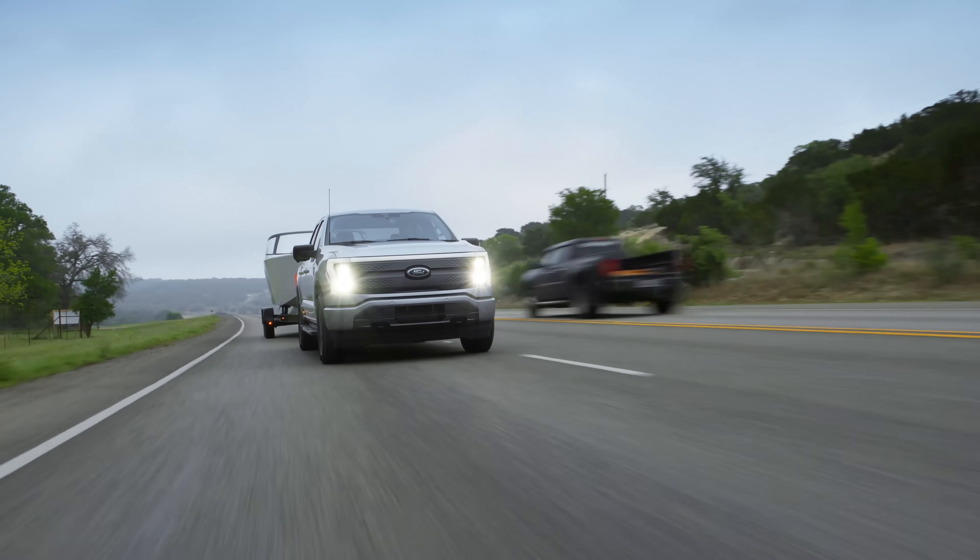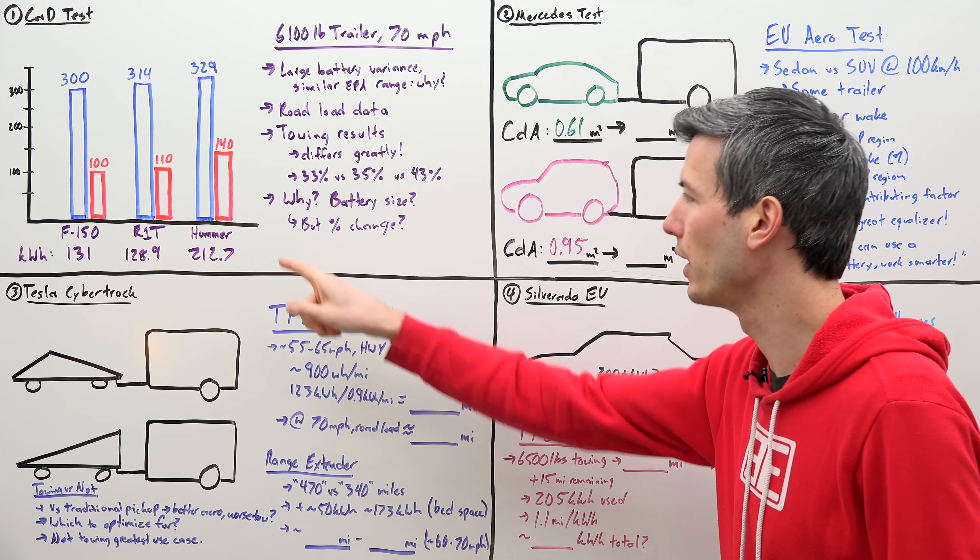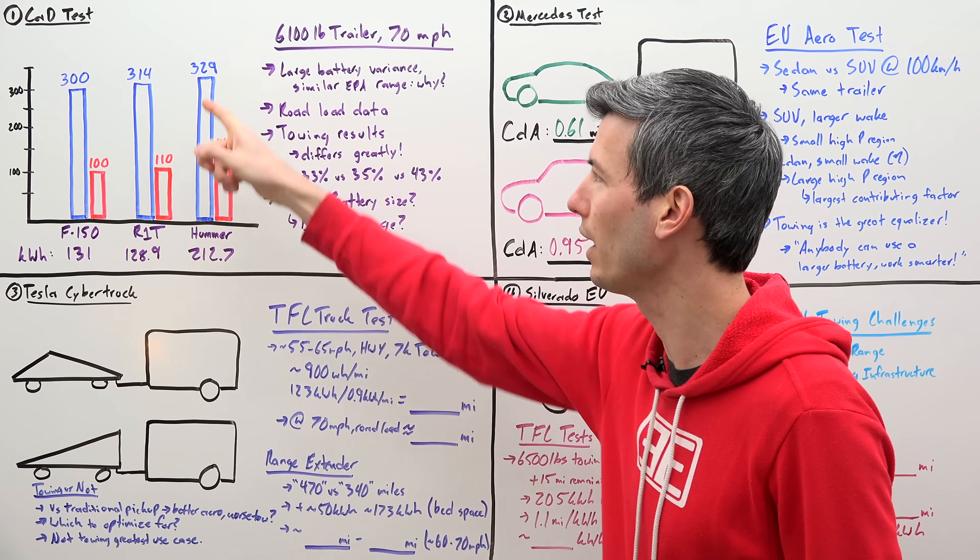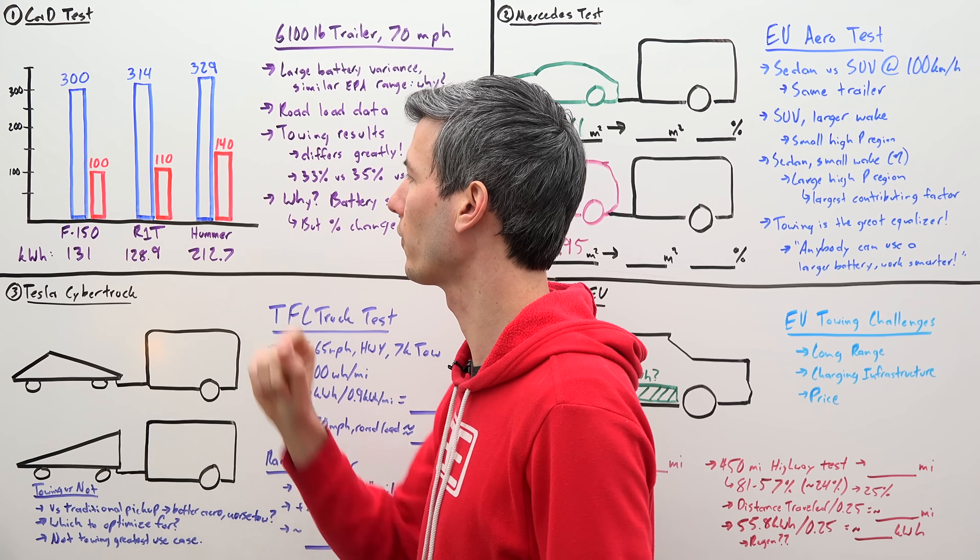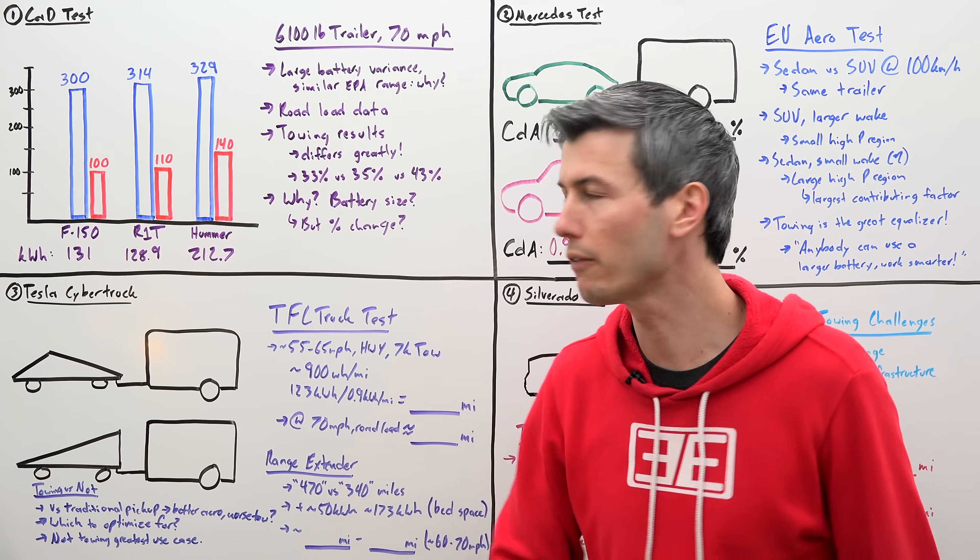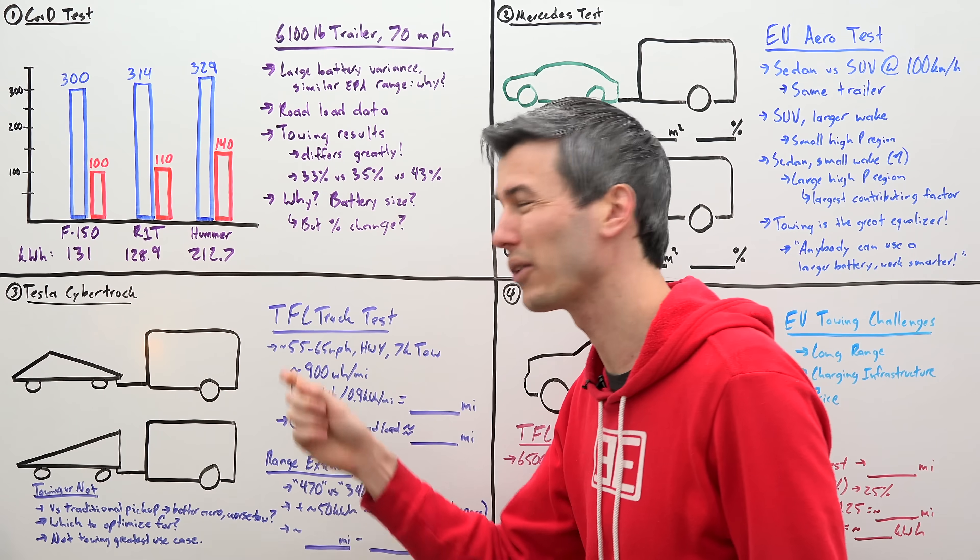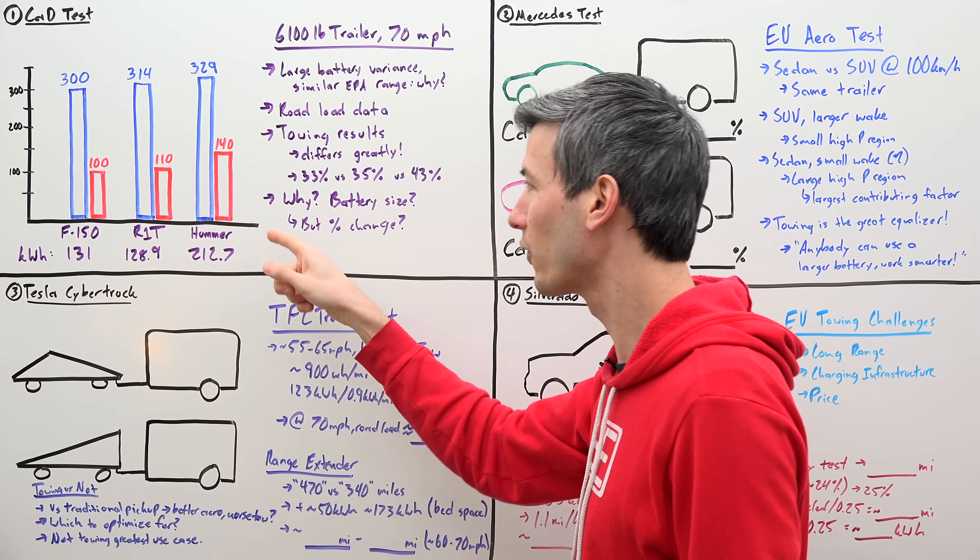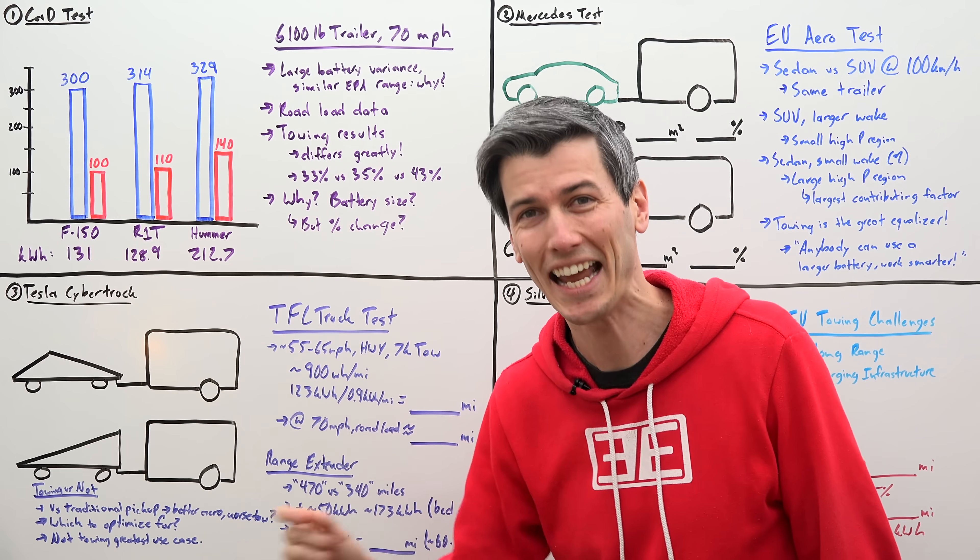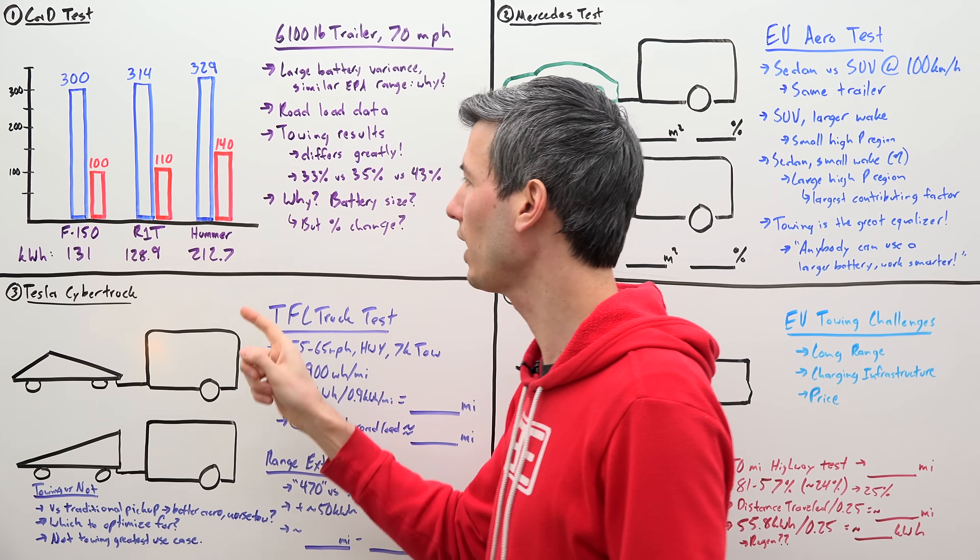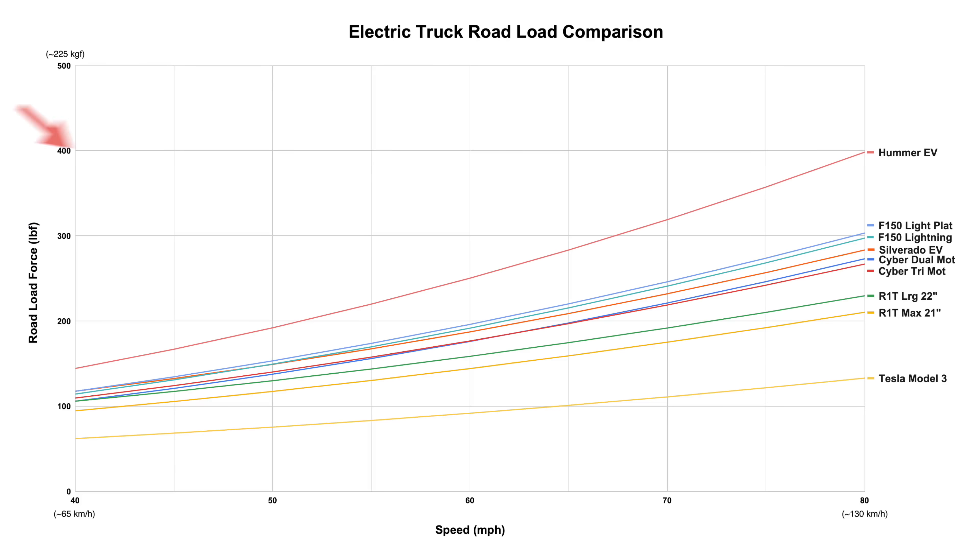So let's start off looking at some of the existing options out there if you're trying to tow with an electric vehicle. You've got the F-150 Lightning, you've got the Rivian R1T, and you've got the GMC Hummer EV. Now, all of these have a range in the low 300s, pretty similar as far as their range. However, they have very different battery sizes. So the F-150 and the R1T with the battery around 130 kilowatt hours versus the Hummer EV about 210 kilowatt hours.